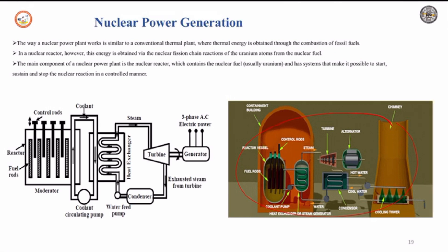The main component of a nuclear power plant is the nuclear reactor. The nuclear reactor contains the nuclear fuel, which is usually uranium, and has a system that makes it possible to start, sustain, and stop the nuclear reaction in a controlled manner.